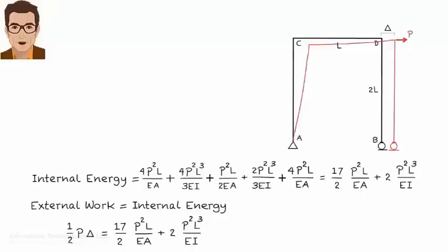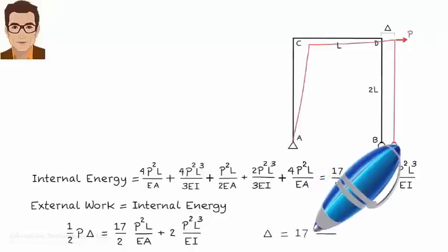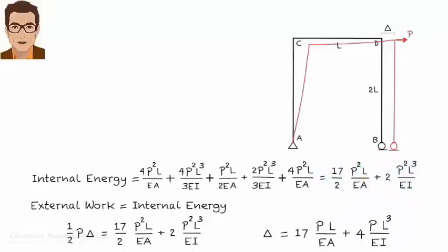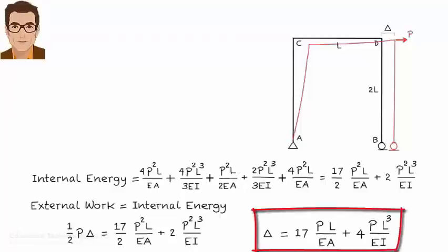Solving for delta, we get the horizontal displacement under the applied load. In this lecture and the previous one, we saw how the work energy equation can be used to calculate displacement in trusses, beams, and frames.